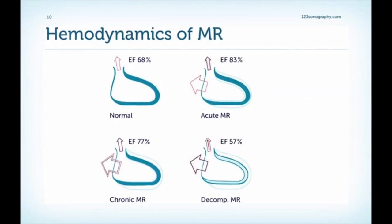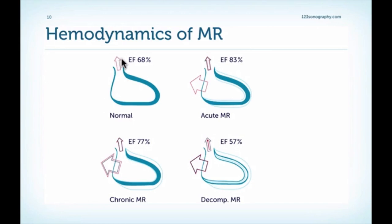To understand why MR is detrimental, we have to look at the hemodynamics of MR. Here's a diagram which shows you the hemodynamics in different forms — the acute, chronic, and decompensated MR — in comparison to normal. In the normal situation, we have forward flow out through the aortic valve, normal ejection fraction, and normal size of the left ventricle.